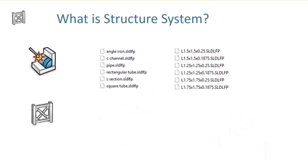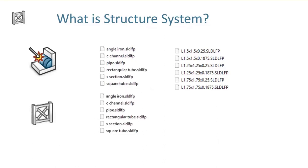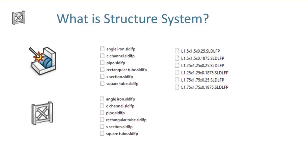Another nice thing about Structure System is it uses the same profiles that Weldments does, for the most part. The one stipulation is it has to be the configured profiles. There used to be legacy ones where each size had its own separate file — those do not work within Structure System. Only the ones that are configurable are able to be used within the Structure System.